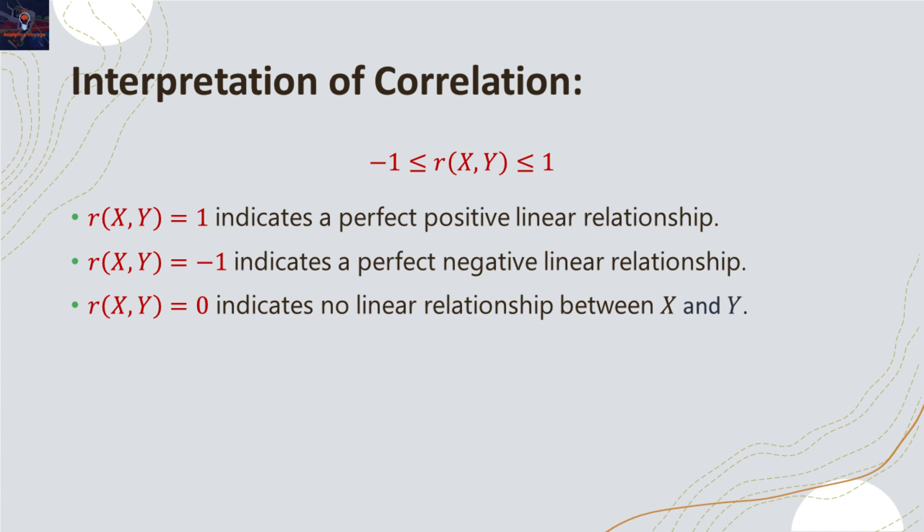Correlation value ranges between minus 1 to 1. While the value of 1 indicates a perfect positive linear relationship, the value of negative 1 indicates a perfect negative linear relationship.